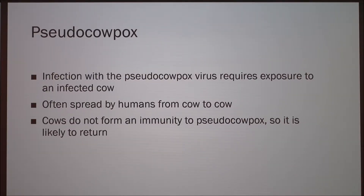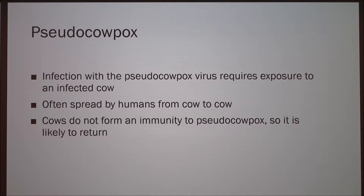Infection with pseudo cowpox virus requires exposure to an infected cow. Humans are often the reason this virus spreads so rapidly within a herd — if an infected cow is touched by a human and they continue touching other cows, the virus will spread. Cows cannot form an immunity to the virus, so it is likely to return to your herd.